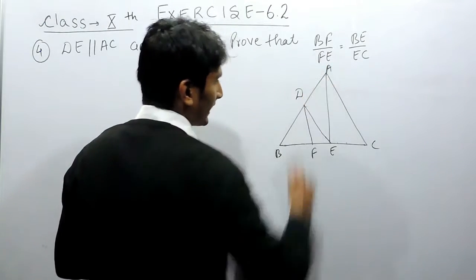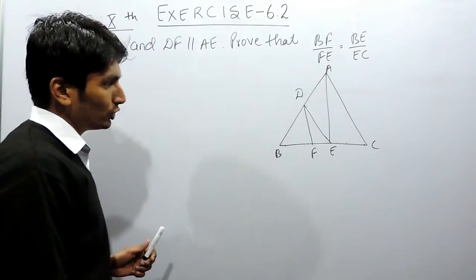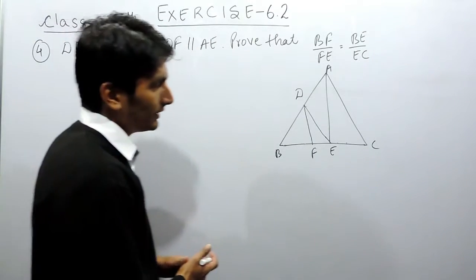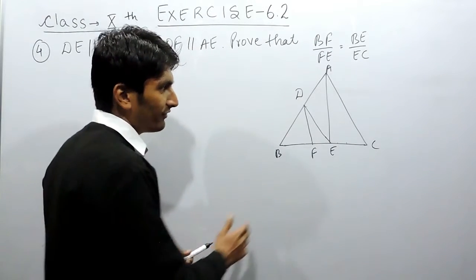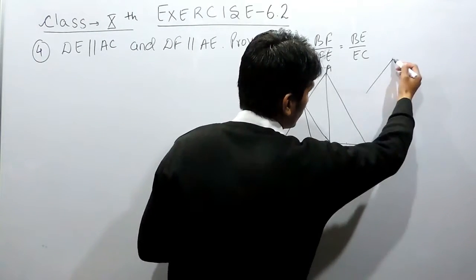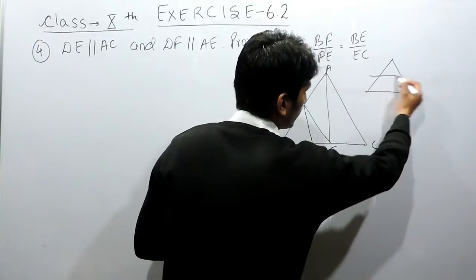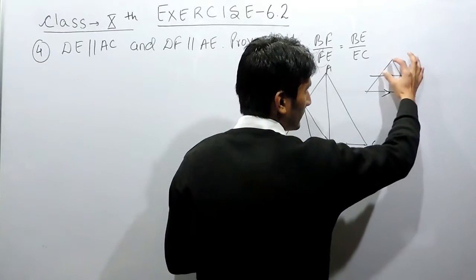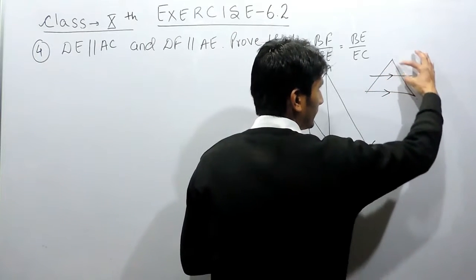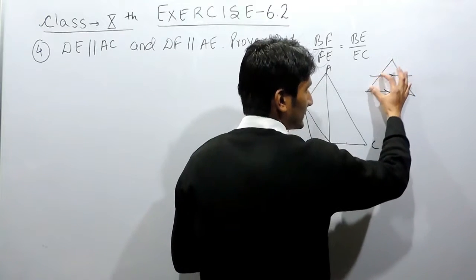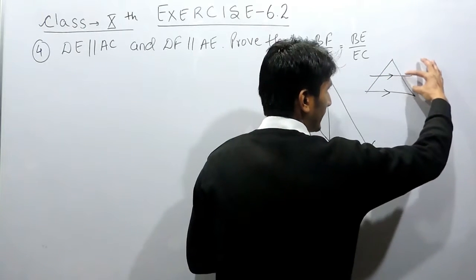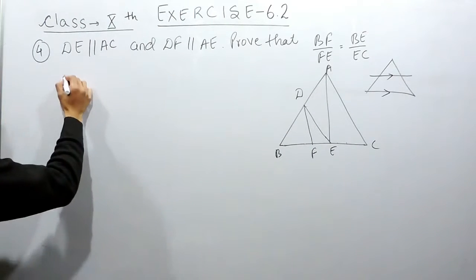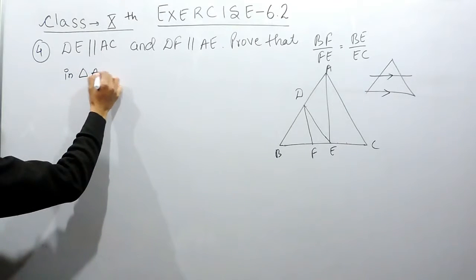To prove this, we have to use the Basic Proportionality Theorem. The Basic Proportionality Theorem states that in a triangle, if I draw a parallel line to one side, that parallel line must cut the other two sides in equal proportion — meaning the ratio between the two parts on one side must be equal to the ratio on the other side. So this theorem we are going to apply here, first in triangle ABC.